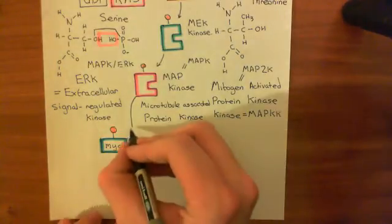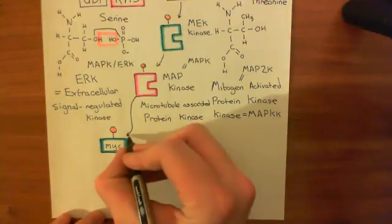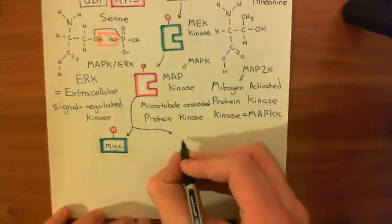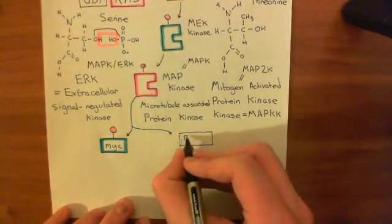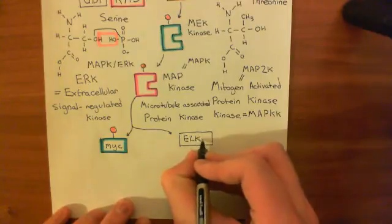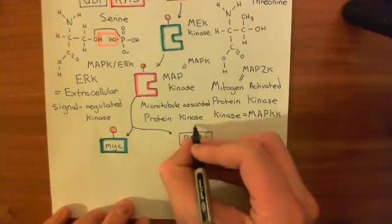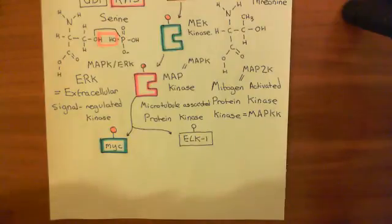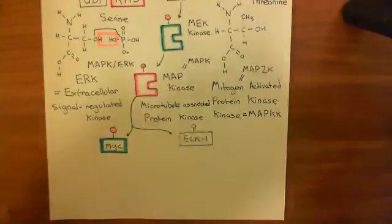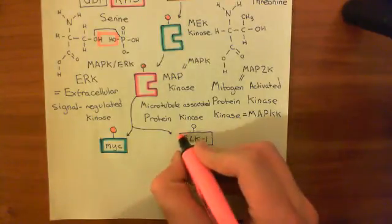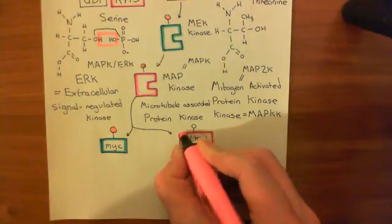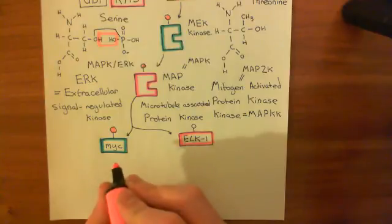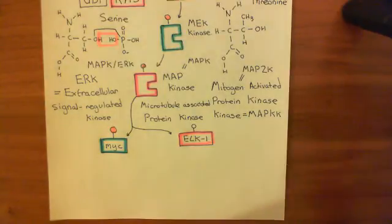Another transcription factor activated by MAP kinase is ELK1. ELK1 is not a direct mitogen in the way that MYC is. Instead, ELK1 is going to lead to the production of another transcription factor, which is then going to do a very similar thing to MYC, so the pathway reconverges afterwards.